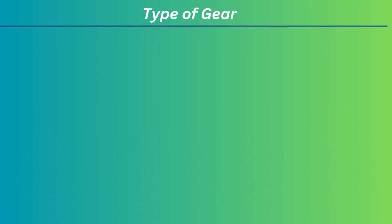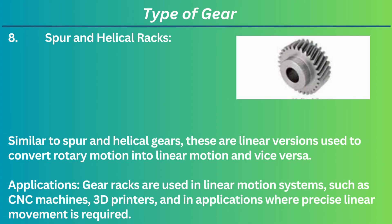8. Spur and helical racks. Similar to spur and helical gears, these are linear versions used to convert rotary motion into linear motion and vice versa. Applications: Gear racks are used in linear motion systems, such as CNC machines, 3D printers, and in applications where precise linear movement is required.